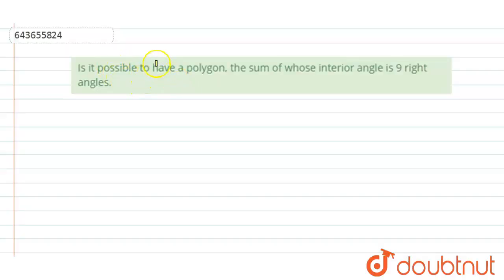Hi, welcome to this video. And the question is: Is it possible to have a polygon the sum of whose interior angles is 9 right angles?